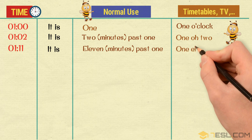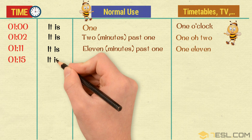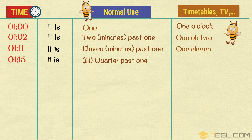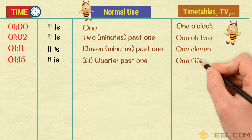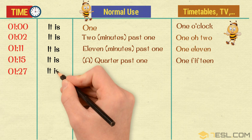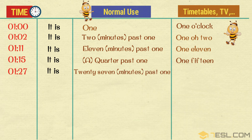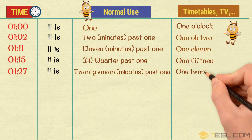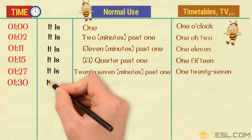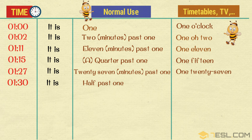1:11. A quarter past one — 1:15. 27 minutes past one — 1:27. Half past one — 1:30.